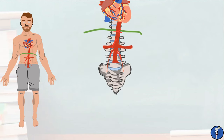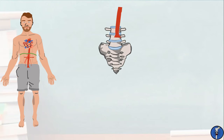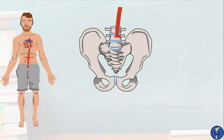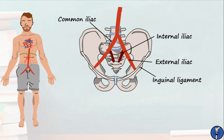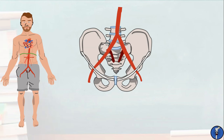At around the level of L4, the abdominal aorta bifurcates into two divisions: the paired common iliac arteries. These themselves divide into the external iliac arteries, which supply most of the lower limb, and the internal iliac arteries, which supply the pelvis and reproductive organs. As the external iliac artery passes under the inguinal ligament and thus leaves the pelvis, it becomes known as the common femoral artery.